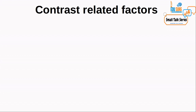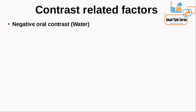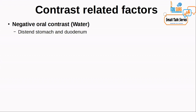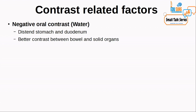The first factor is contrast-related factors. There is oral contrast and intravenous contrast. For CT Pancreas Protocol, the oral contrast is usually negative, and the most commonly used negative oral contrast is water. This helps in distending the stomach and duodenum. Since the pancreas is intimately related to the C-loop of duodenum, distending that loop helps, and negative oral contrast gives better contrast between the bowel and the pancreas.